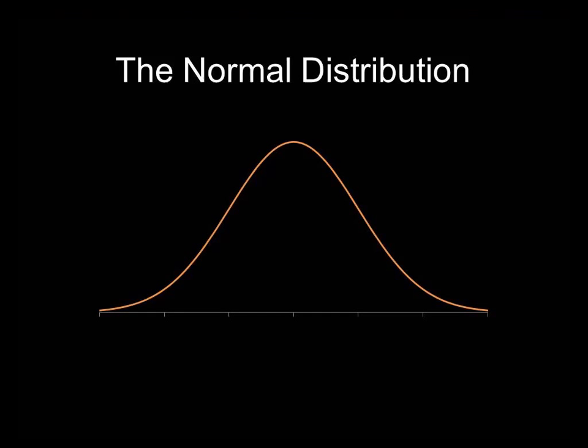The normal distribution is a concept that helps us figure out the probability of an outcome. For example, scores on a test, levels of employee performance, job satisfaction, etc. It's also a concept that helps us understand how much confidence we should have in a result.